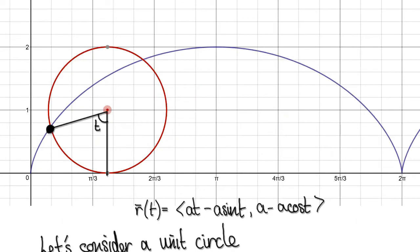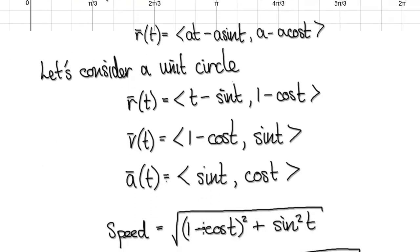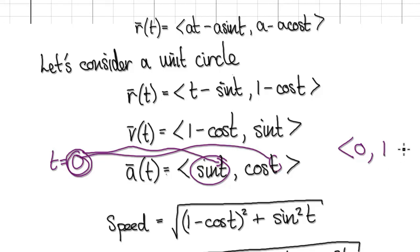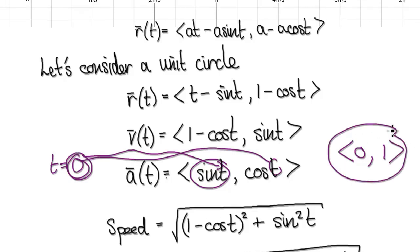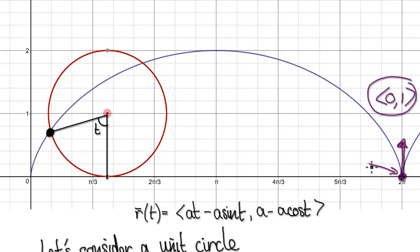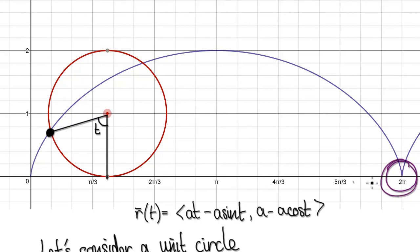If you look at the acceleration when t equals 0, the first component is zero and the second component — putting zero in — gives one. So the acceleration is (0, 1): straight up. Around this region at t equals 2π, the acceleration wants to go straight up, while the speed is actually zero at that point. By using vectors, you can really understand what's happening at this region of the cycloid.